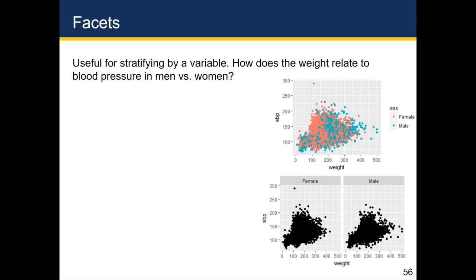So how would we create that plot on the top right where we had different colors? We would start with patients. Then we would make a ggplot. And inside of the aesthetic function, or AES, we would map weight to the x-axis, systolic blood pressure to the y-axis, and sex to the color aesthetic. Remember, this is a scatter plot, so you want to use color rather than fill. And then we would add geom point, and it would give us this plot on the top right.